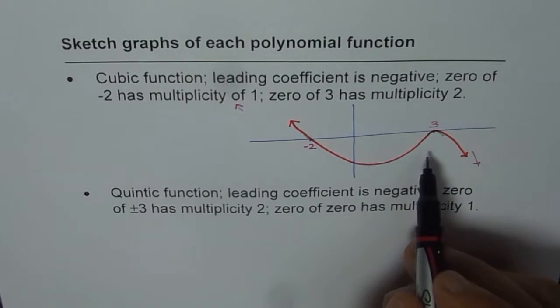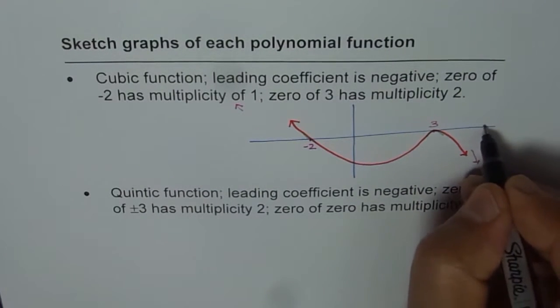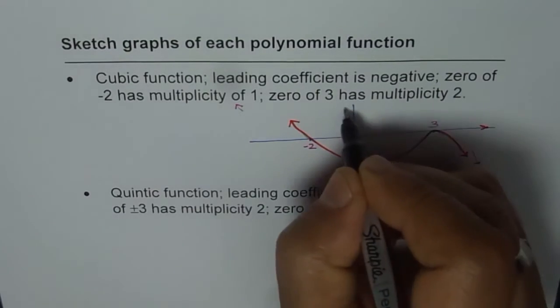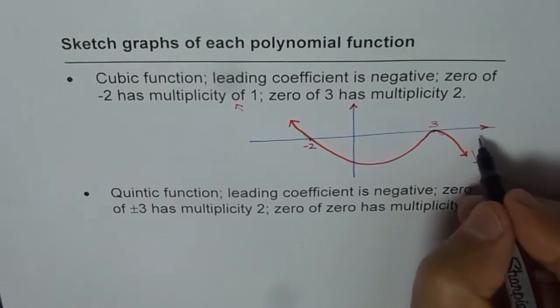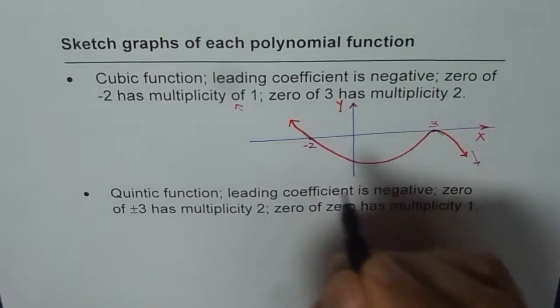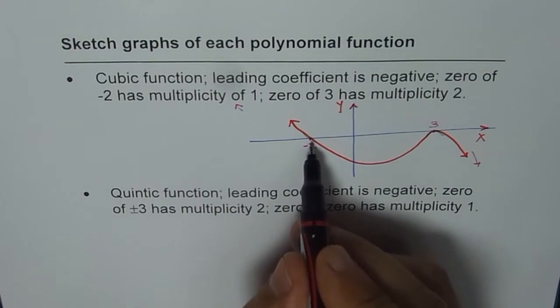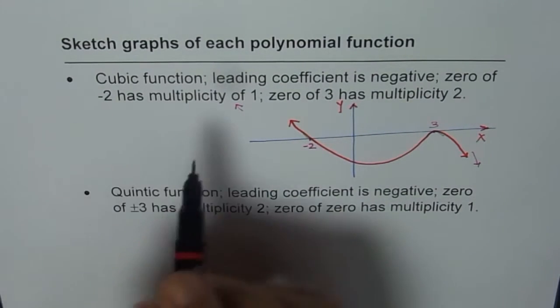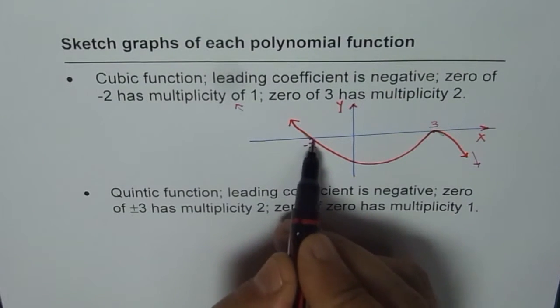Second important thing is, be careful about labeling, especially the zeros as has been mentioned. So that is where x and y-axis. Now zeros, you can see, at minus 2, multiplicity 1 means a linear zero, straight line.